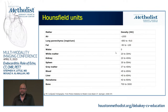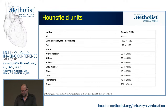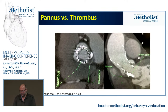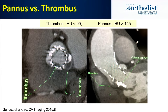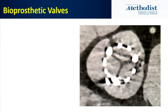Hounsfield units reflect the attenuation of tissue on CT — this is how CT performs tissue characterization. By definition, water is zero. Things below water include fat, which is negative 50 to 200. Lung is about negative 800 to 1000. For pannus versus thrombus, it's been suggested that pannus is above 140 Hounsfield units due to fibrous tissue, and thrombus is less than 90, though there is significant overlap between the two.